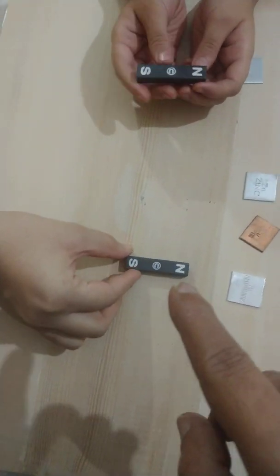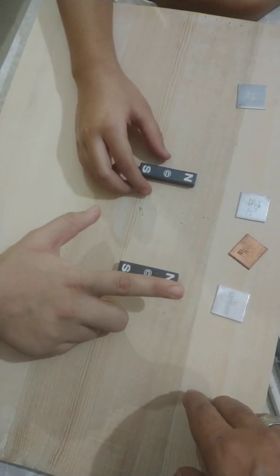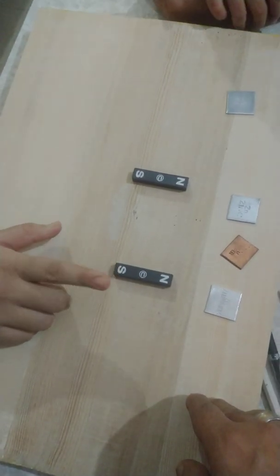This is also another magnet. In this also, there is an N and an S. What does it mean? The N one is North Pole and the S is South Pole.